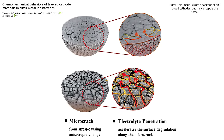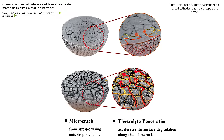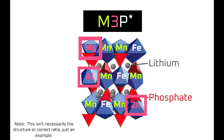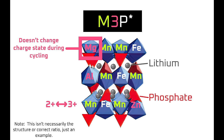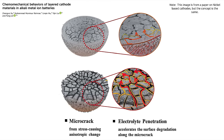The second way to reduce dissolution is to prevent the cathode particles from fracturing. As we saw, Jahn-Teller effects can cause the cathode crystal structure to distort, which in turn can cause the cathode particles to crack, exposing more surface area for manganese to dissolve into the electrolyte. Elements like magnesium, aluminum, and zinc can be used to anchor the crystal structure, which reduces distortions from Jahn-Teller effects and therefore reduces cracking. However, this still isn't a direct fix to dissolution — it just mitigates it.